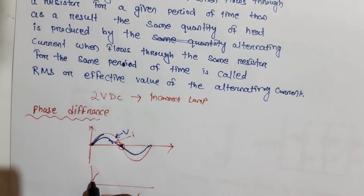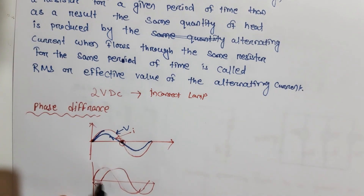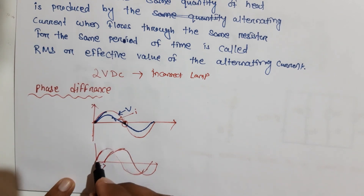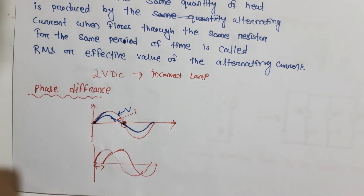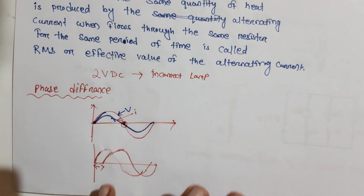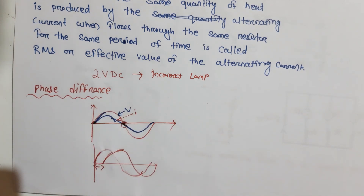However, if the voltage starts from the origin but the current starts later, there is a phase difference between them. Because the voltage starts first and the current starts after some time, the current is said to lag the voltage. This is the phase difference — here the current lags the voltage. We will discuss phase difference in more detail in the phasor diagram. Thank you for watching, please like and subscribe.